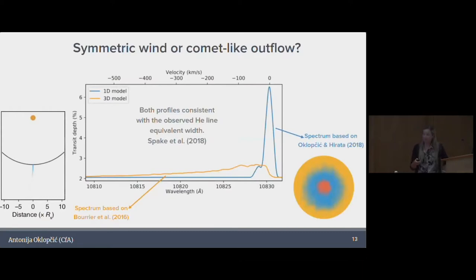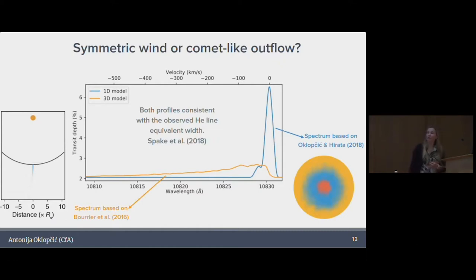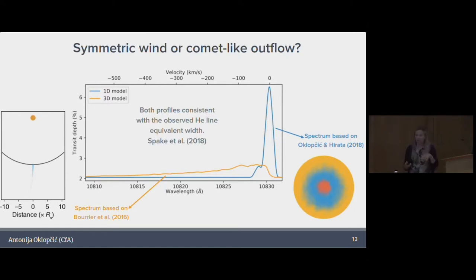Because in the Hubble data the line is unresolved, we cannot tell much beyond just the equivalent width of the line, and we cannot say something about how this gas is distributed. This plot from Jessica's paper shows two different models used to model the signal. One is the Parker wind model that's fairly spherically symmetric and produces a double-shaped profile. Another model by Vincent Bourrier has quite different geometry — it has an elongated tail of material. With the Hubble data alone, we cannot distinguish between these two geometries.